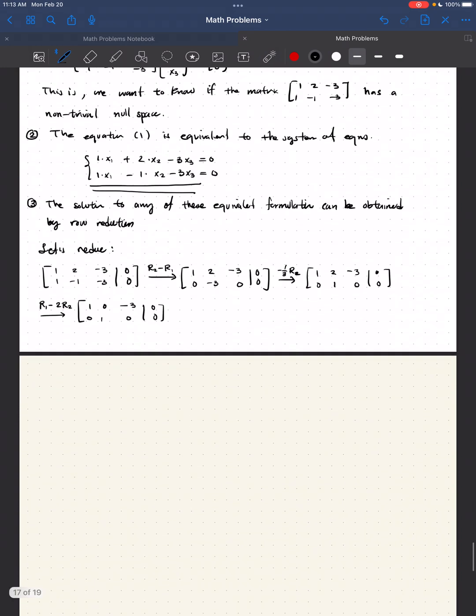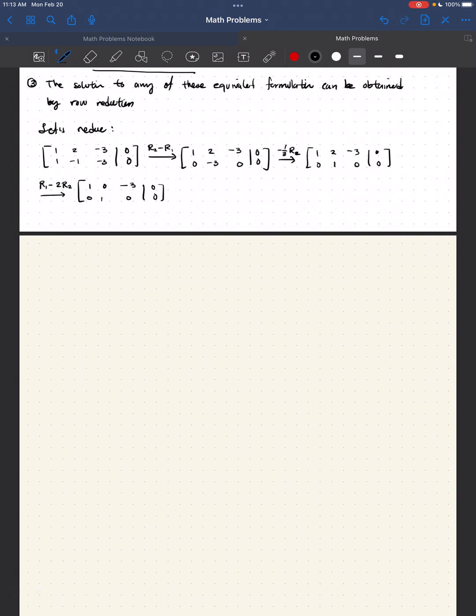Now, what is it that this is telling us? Right? This indicates that the system that we started with is equivalent to x1 minus 3x3 equal to 0, and x2 equal to 0. Okay. But from here, we can transform it into something that looks like this. We have x1 is equal to 3 times x3, and x2 is equal to 0 times x3.